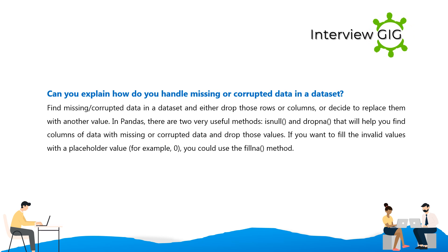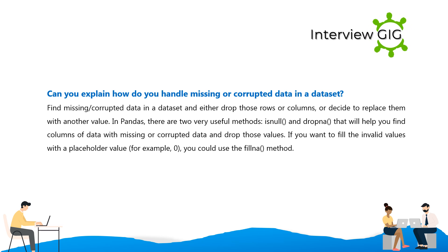How do you handle missing or corrupted data in a dataset? Find missing or corrupted data and either drop those rows or columns, or replace them with another value. In pandas, two very useful methods — isnull() and dropna() — help you find columns with missing or corrupted data and drop those values. If you want to fill invalid values with a placeholder such as 0, you can use the fillna() method.